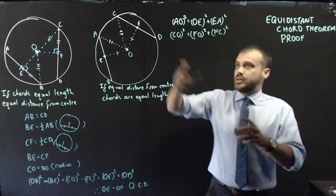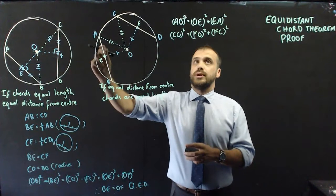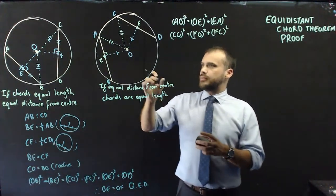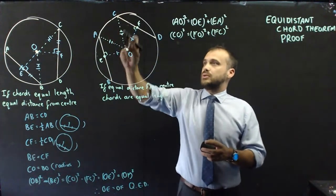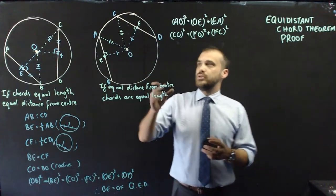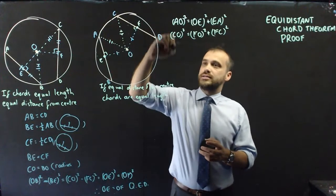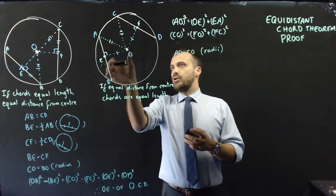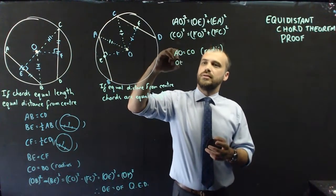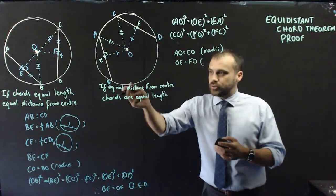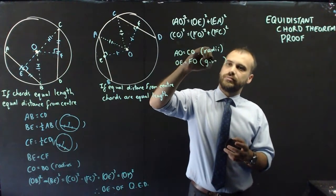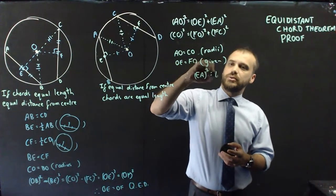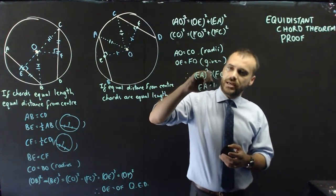I'll try to keep this pretty straightforward. We've got our two Pythagorean theorems: AO squared equals OE squared plus EA squared — we know that's a right angle because we're going from the center to a chord — and CO squared equals FO squared plus FC squared. What do we know? We know that AO and CO are the same because they're radii. We also know that OE equals FO because we're told they're equal distance from the center — so we just write 'given' there. Since those terms are the same, EA squared equals FC squared, which means EA equals FC.